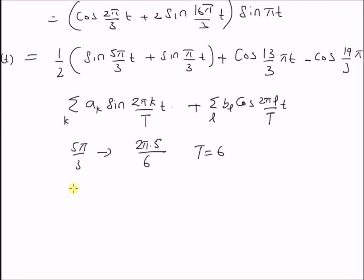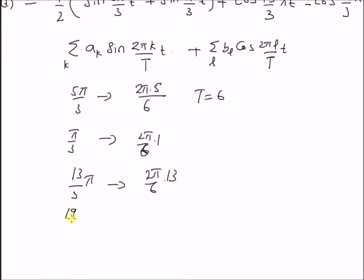And the next value clearly corresponds to π/3 corresponds to 2π/6·1. Again T is equal to 6 and the next two values corresponds to 13/3·π is equal to 2π/6·13. And finally, 19/3·π corresponds to 2π/6·19.